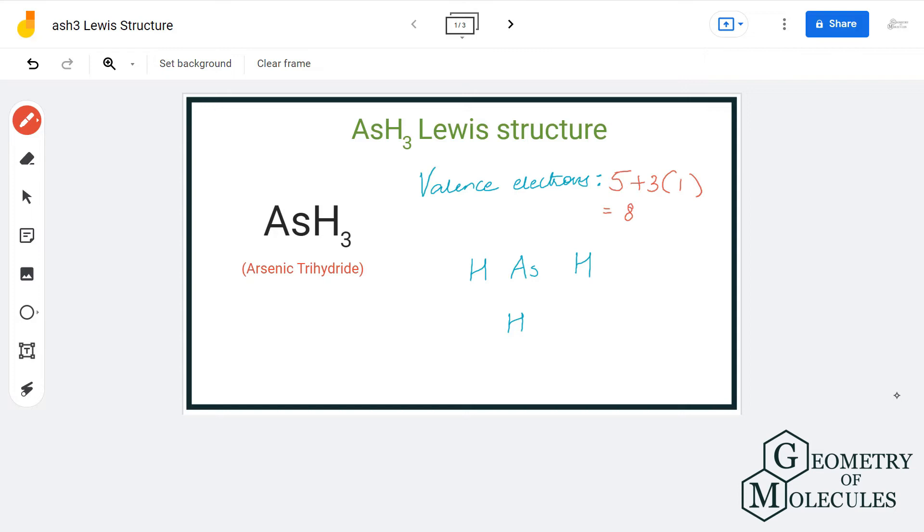Now here, arsenic will take the central position and all the hydrogen atoms will be arranged around the atom like this. To show a bond between these atoms, we are going to place a pair of electrons.